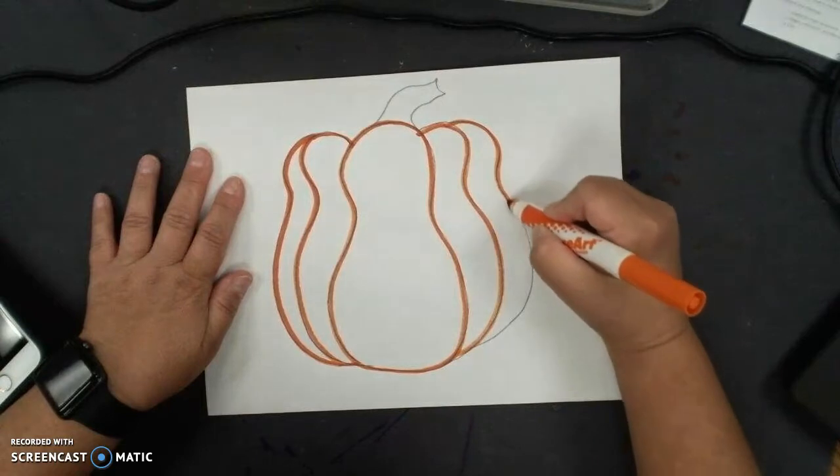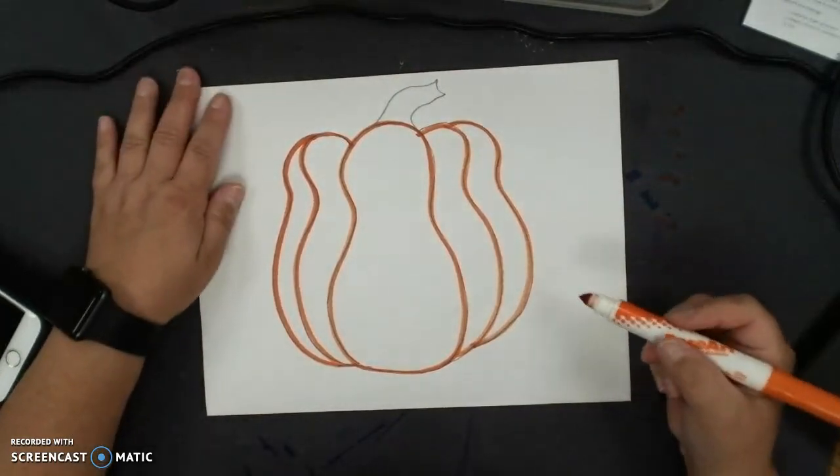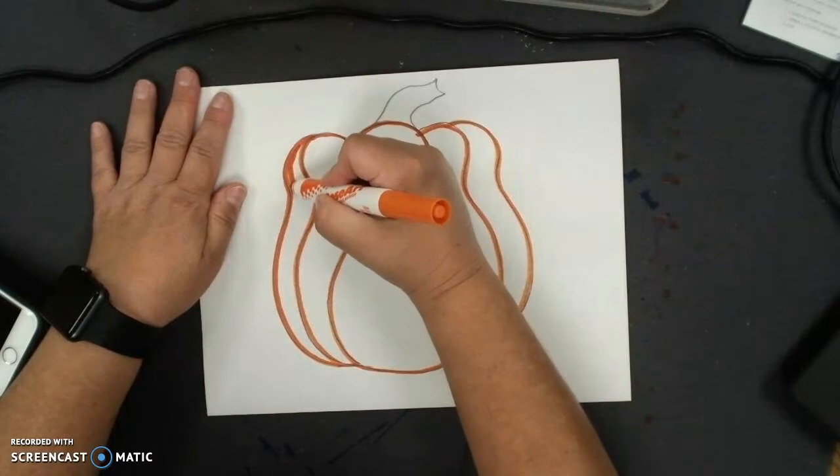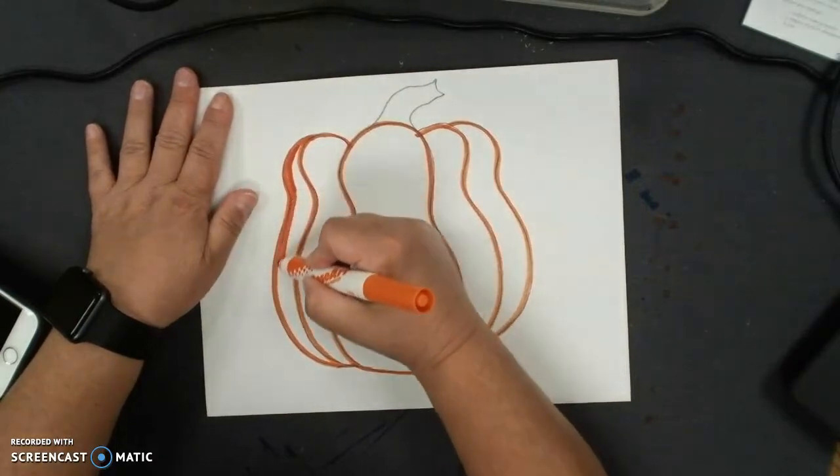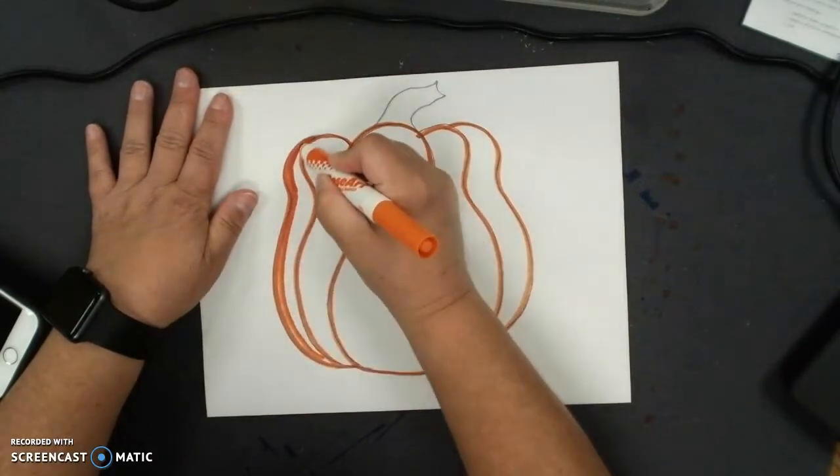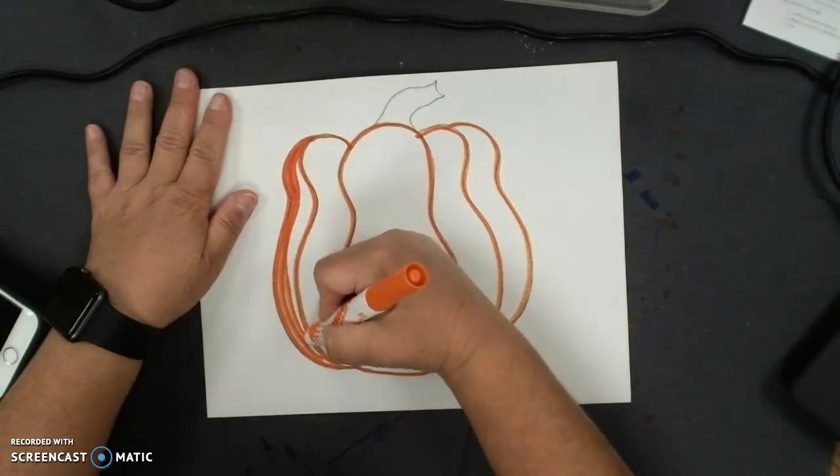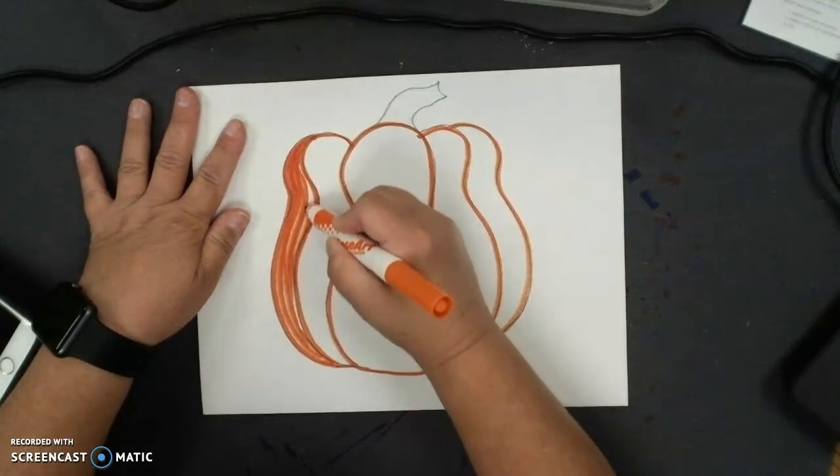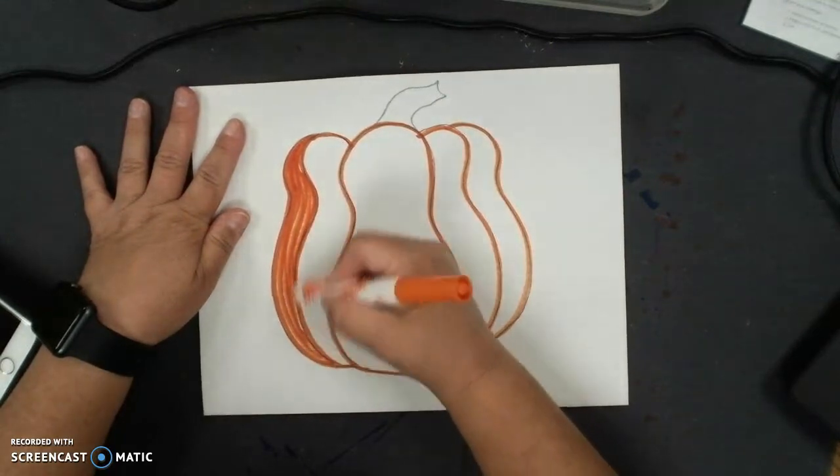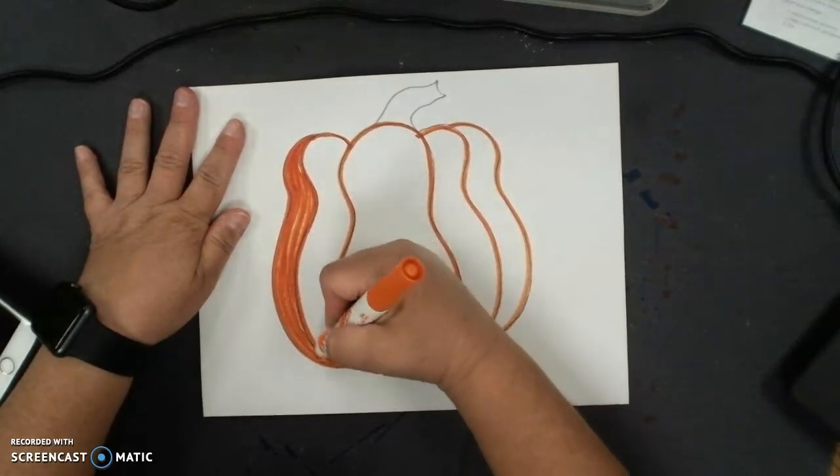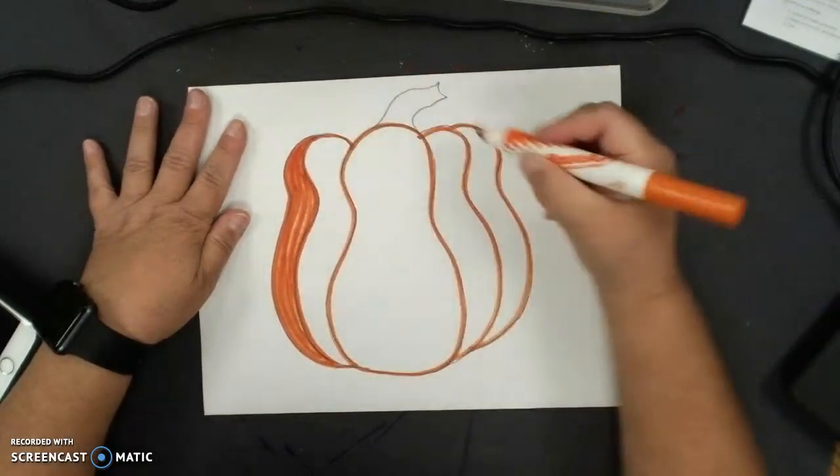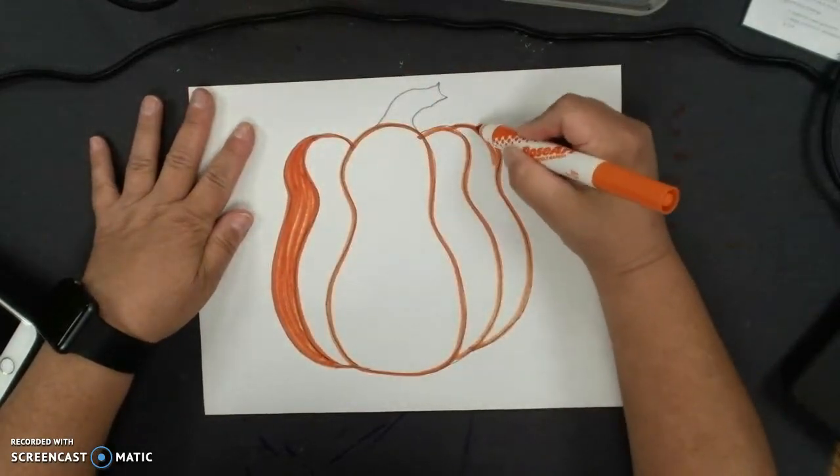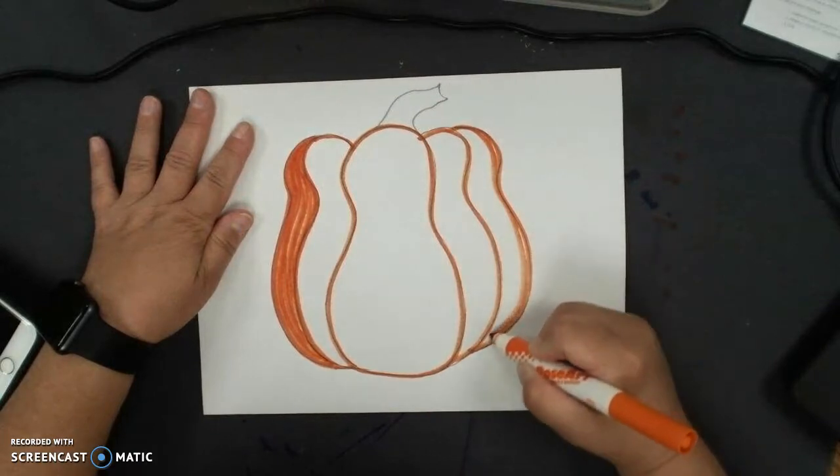Then I'm going to color in my pumpkin, and when I color my pumpkin I'm going to kind of go in one direction. I'm going to kind of keep going with this shape that I've used because that's going to give the illusion of it curving. I'm going to keep going until I fill all the space in. This marker is actually running out it looks like.